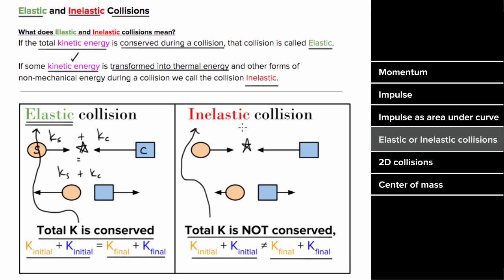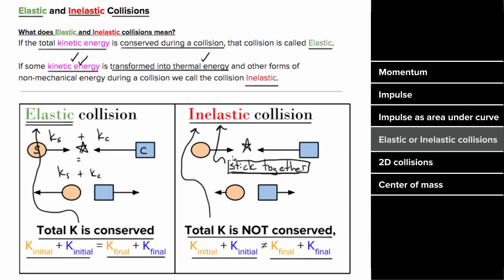While masses could bounce during an inelastic collision, if they stick together, the collision is typically called a perfectly inelastic collision, since in this collision you'll transform the most kinetic energy into thermal energy. And when two objects stick together, it's a surefire sign that that collision is definitely inelastic.